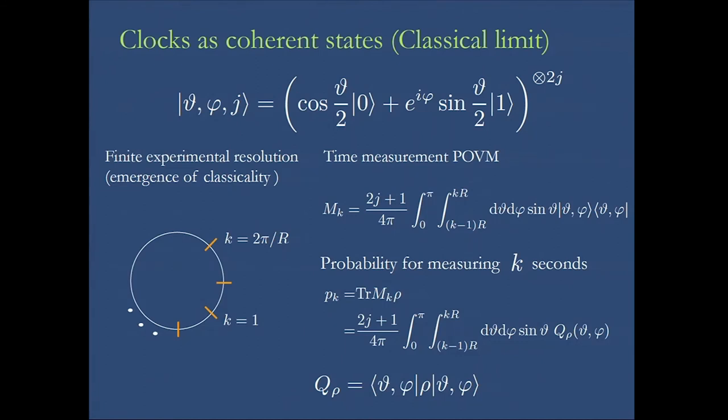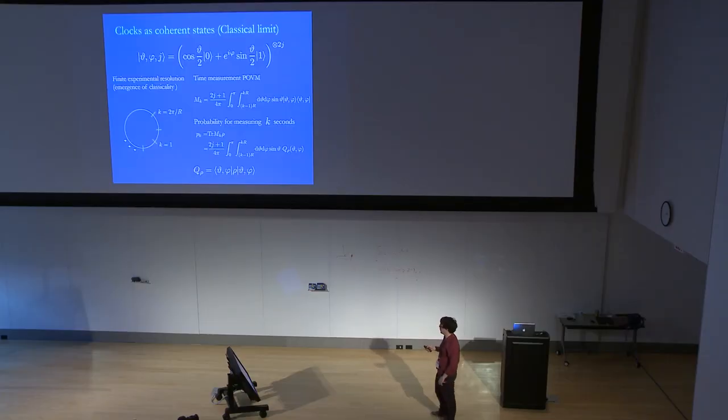Well, in order to analyze this macroscopic limit, we take into account two things. First of all, we no longer have a two-level system. Rather, we have a J-level system, where J is a very high number, and we consider measurements of finite accuracy. This is a realistic thing, so there is no measurement with infinite accuracy.